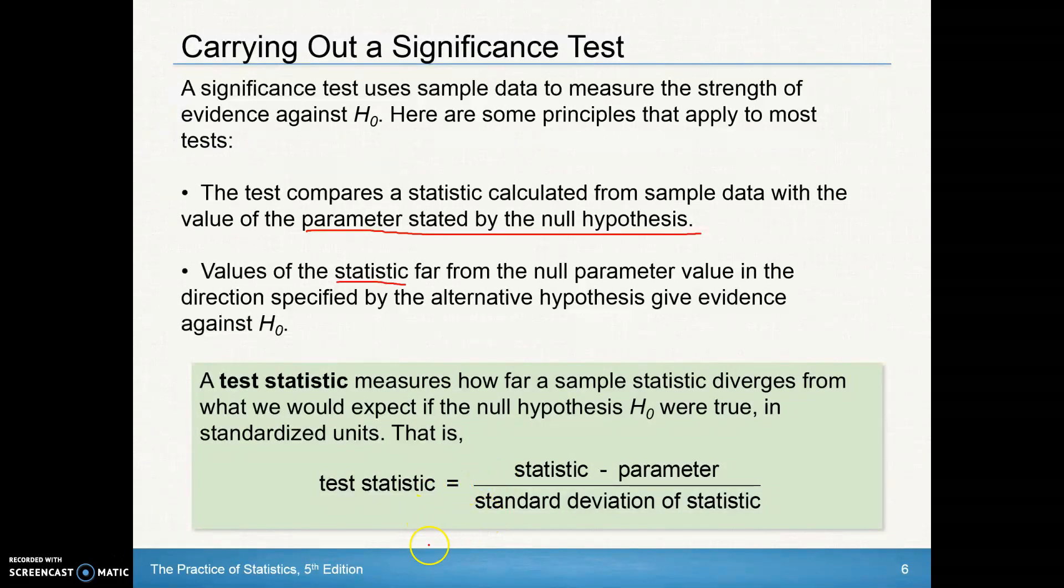So we have to actually do some calculations here in these problems, and we're going to calculate what's called the test statistic. To calculate the test statistic, you're going to take that statistic. In our case, that was our p hat, and we'll subtract our parameter, which was p, all over that standard deviation of the statistic. Again, that can vary depending on whether we're using proportions or means, but that standard deviation of our statistic, if you remember for proportions, is that square root of p times q, all divided by the square root of, or divided by n and the square root of all that.